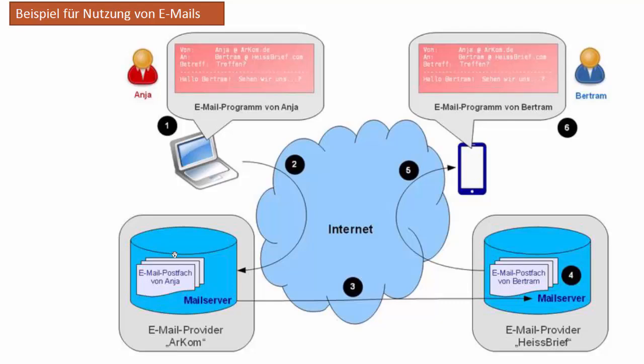Diese E-Mail wird dann über das Internet an den Mail-Server gesendet. Sie wird dann von Anja hochgeladen, und von dort wird sie weitergesendet an den Mail-Server von Bertram, wo sie in einem bestimmten E-Mail-Postfach von Bertram abgelegt wird.